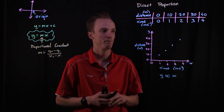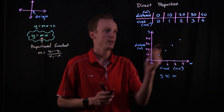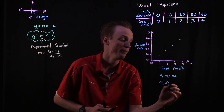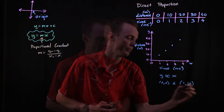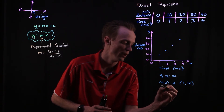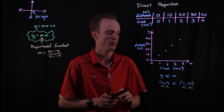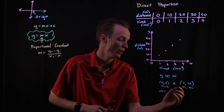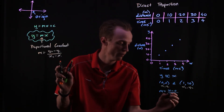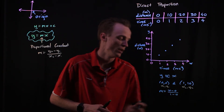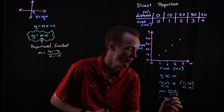Because we know it's the gradient, we can find the proportionality constant the same way we'd find the gradient of any linear line. A handy formula is: slope = (y₂ − y₁) / (x₂ − x₁), or rise divided by run. Using two points from our problem — the origin (0, 0) as (x₁, y₁) and (1, 10) as (x₂, y₂) — we get slope = (10 − 0) / (1 − 0) = 10 ÷ 1 = 10. So our proportionality constant is 10.